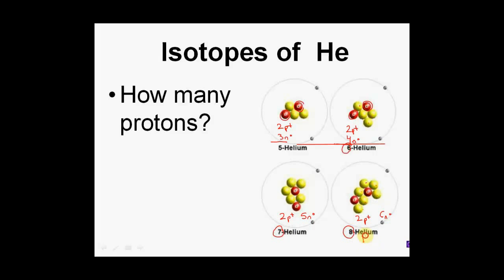It's often written as helium-dash-eight rather than putting the eight first. So once again, the question is how many protons does it have? All of these have two protons. That's what makes it helium, but there are several different forms of helium. We know they're different because they have different masses, and different masses indicate a different number of neutrons.